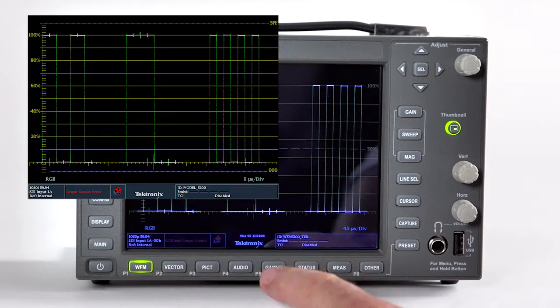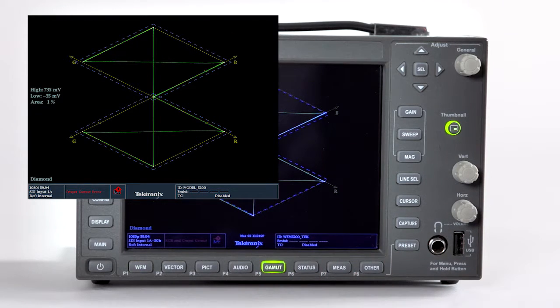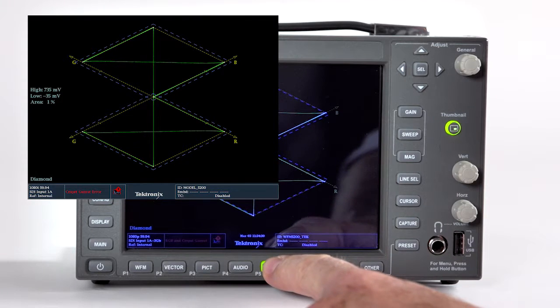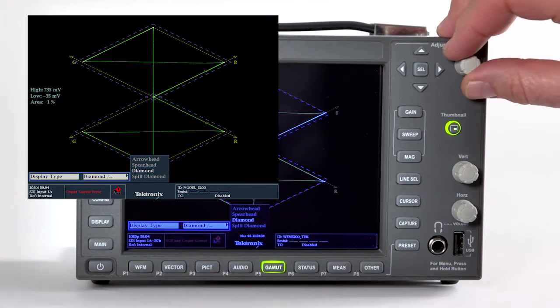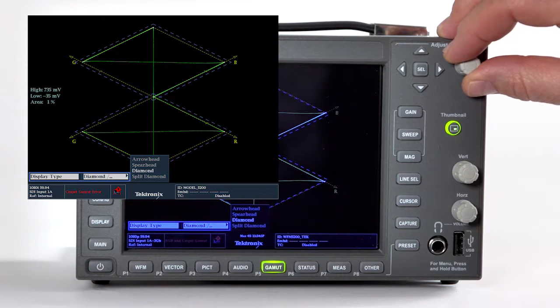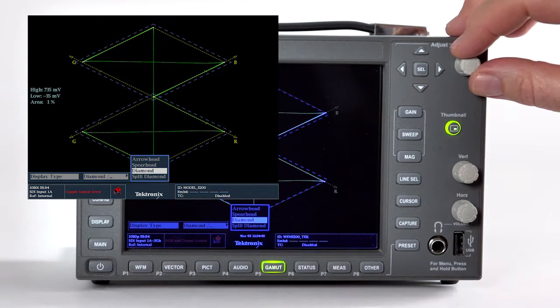To display the diamond display, press the Gamut button for one of the tiles. Push and hold the Gamut button to display the menu, and use the select and arrow keys to navigate to diamond or split diamond displays.